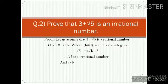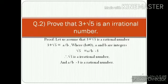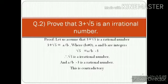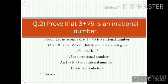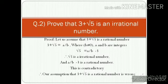Now, √5 is an irrational number, but a/b − 3 is a rational number. This means irrational equals rational, which is not possible — this is a contradiction. Therefore, our assumption that 3 + √5 is a rational number is wrong. Therefore, 3 + √5 is an irrational number.